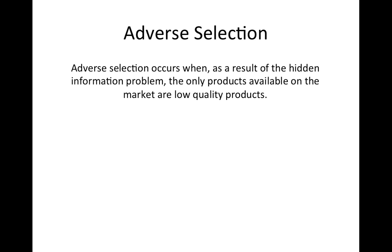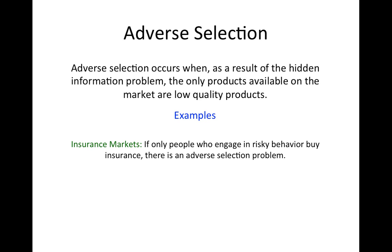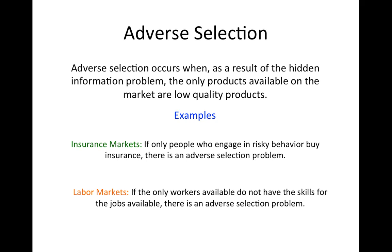Another term for the hidden information problem is adverse selection. If the hidden information problem results in adverse selection, then the only products available on the market are of low quality. Other examples include insurance markets in which only people who engage in risky behavior buy insurance, and labor markets in which the only workers available for hire are ones that lack the skills for the available jobs. In extreme cases of adverse selection, the market will cease to function altogether — for example, if insurers don't want to sell insurance to high-risk customers, or if high-risk customers are unwilling to pay the high premiums, then no insurance policies will be sold and the market will cease to exist.